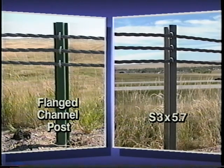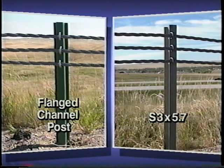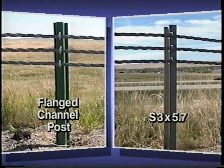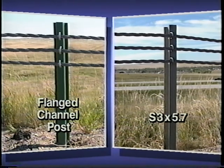A flanged channel post and soil plate made of re-rolled rail steel would cost about half as much as the standard G1 post and soil plate. The South Dakota cable system costs almost $1 per linear foot less than the G1 guardrail.